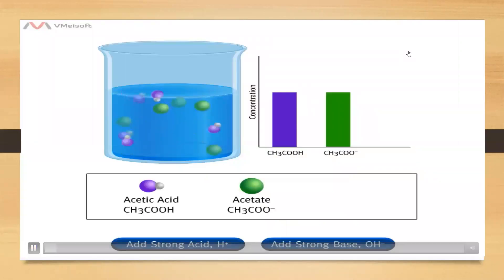A buffer is an aqueous solution containing both a weak acid and a weak base that are a conjugate acid-base pair. The buffer shown contains the weak acid and its conjugate base, acetate. These species are dissolved in water. Water molecules are not shown in this animation to draw focus to the buffer components.